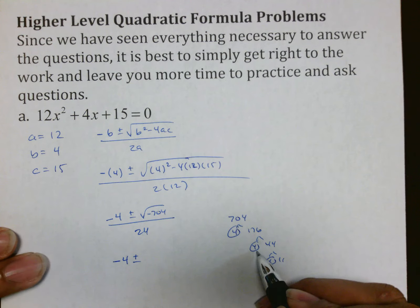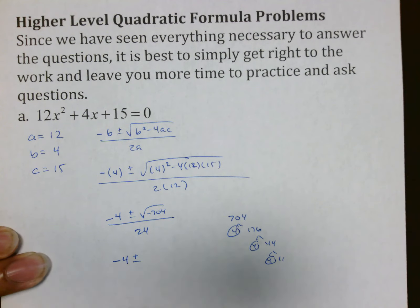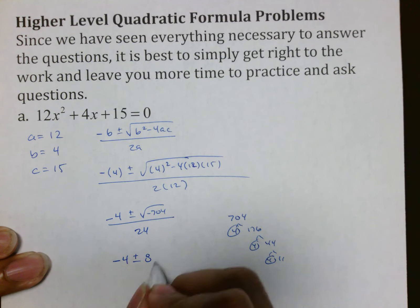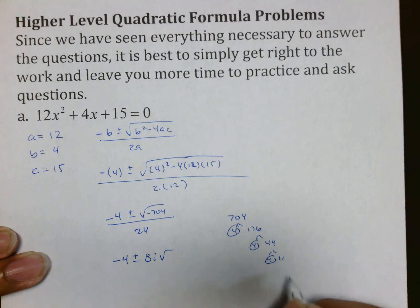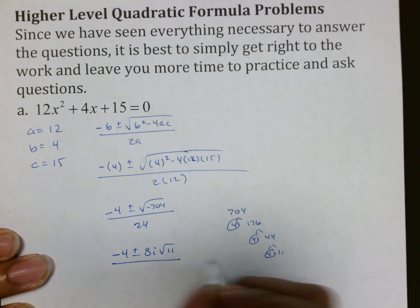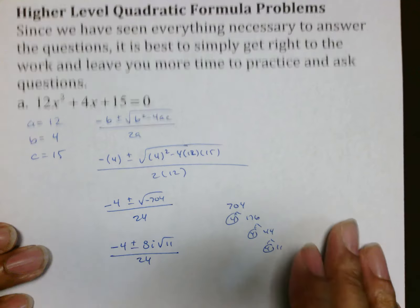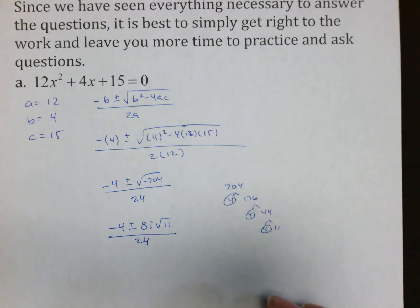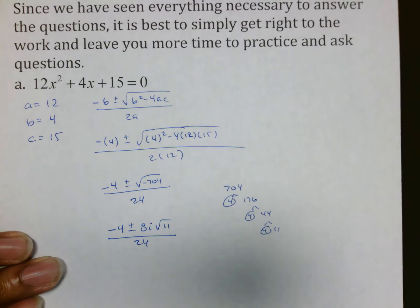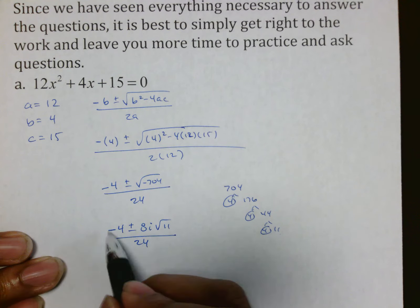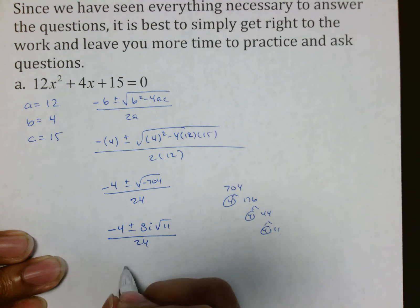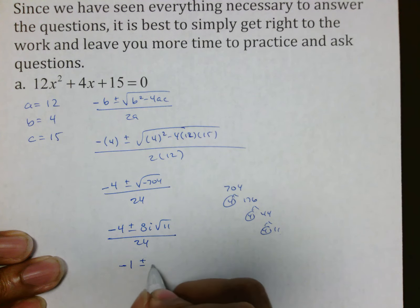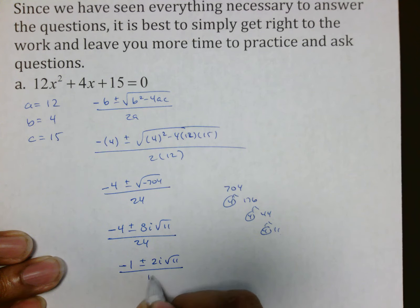That's 2 times 2, which is 4, times the third 2, which is 8. 8, don't forget it was imaginary, so it would be 8i root 11 all over 24. And the last thing we have to do is divide all these by whatever number all of them can go with, and in this case it is 4. So you end up with negative 1 plus or minus 2i√11 all over 12.